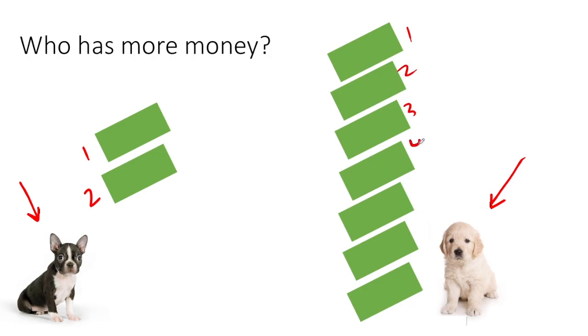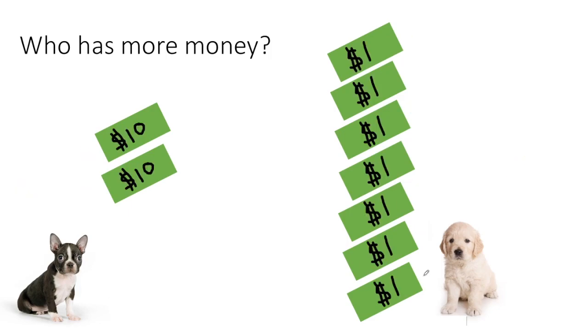And here we see one, two, three, four, five, six, seven bills. But if I were to tell you the value of those bills was not the same, that Bruno's bills were tens, and Fluffy McFlufferson's were ones.